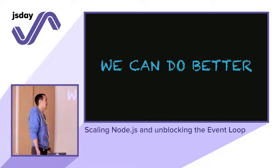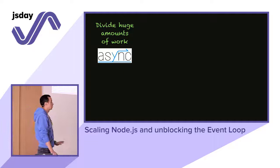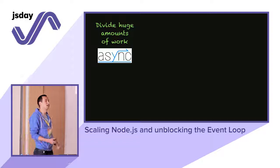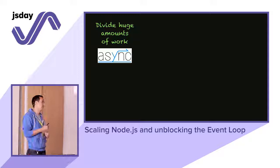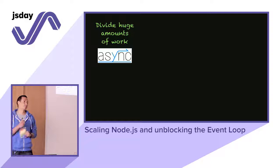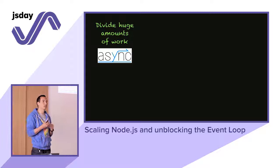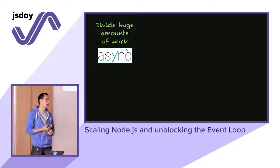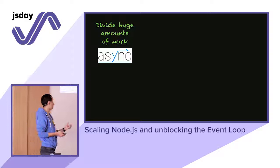We can divide huge amounts of work — such as a huge array you want to process — using libraries such as async. Async lets you process a huge array by the thousand or by the hundreds. If you defer the processing of blocks to the next event loop iteration, it will only block for those hundreds at a time. You can configure it to a thousand if your app is super fast or the operations are tiny. You can process millions of records in a chunked way without blocking the event loop.